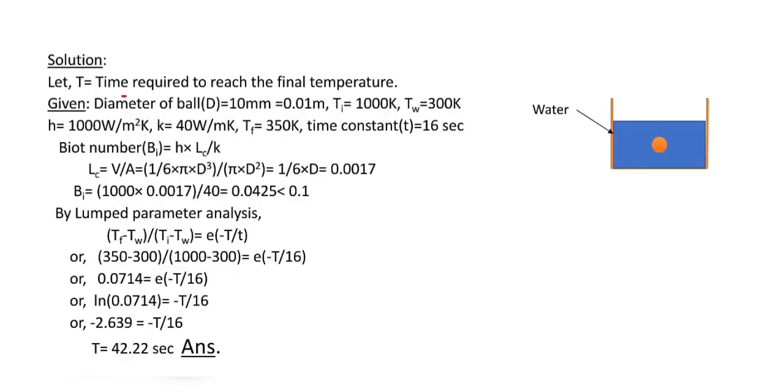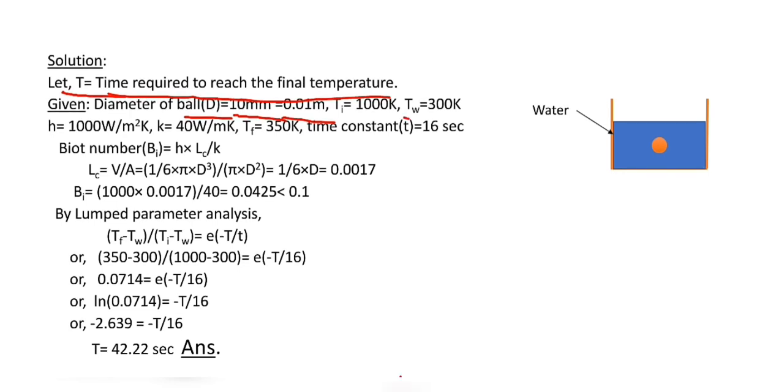Now let's go for the solution. We suppose T is equal to time required to reach the final temperature. Diameter of ball D is 10 mm, which is 0.01 meter. Initial temperature of steel ball is 1000 Kelvin, water temperature is 300 Kelvin, convective heat transfer coefficient is 1000 Watt per meter square Kelvin, thermal conductivity is 40 Watt per meter Kelvin, final temperature is 350 Kelvin, and time constant is 16 seconds. All these values are given in the question.